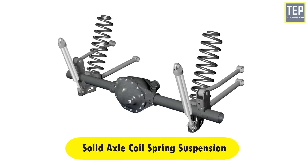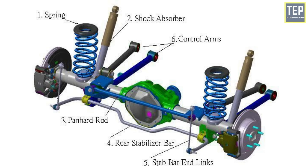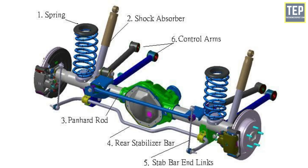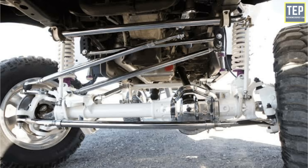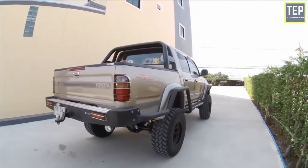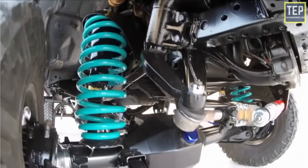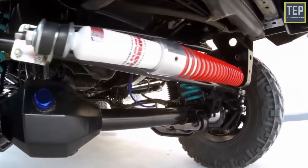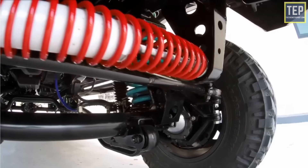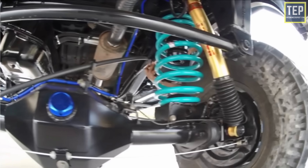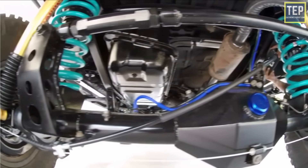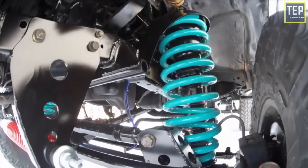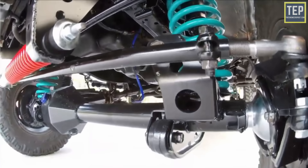In solid axle coil spring suspension, the coil springs are seated on pen-shaped brackets attached to the rear axle. Torque tube drives are also attached to this setup, and the coil springs are not subjected to the driving thrust. The shock absorbers prevent the vehicle from rolling, and the energy stored in the coil springs is greater than that of leaf springs. This type of suspension is always used in conjunction with a torque tube, torque reaction link, or torque rod drive, so the coil springs are not subjected to driving thrust or twist.